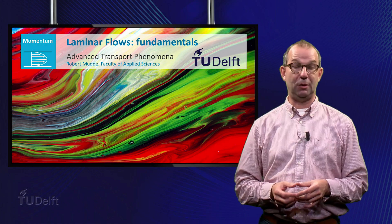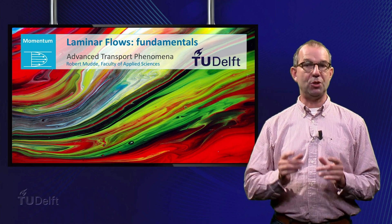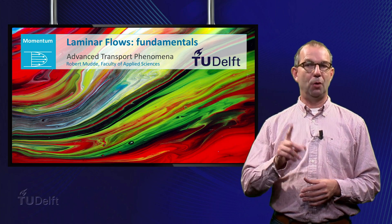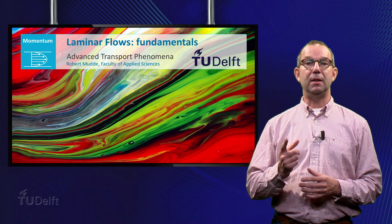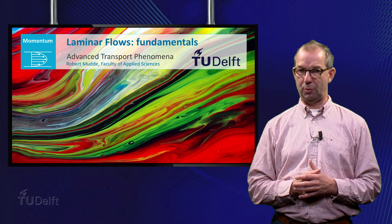However, we mentioned that for low Reynolds number there was an analytic expression: 4f equals 64 over Reynolds. In this lecture we are going to derive this expression.